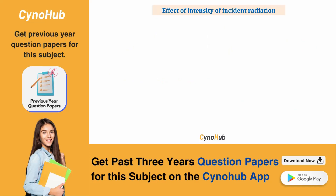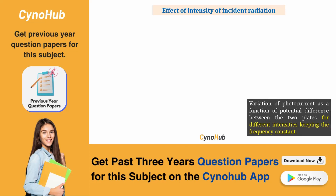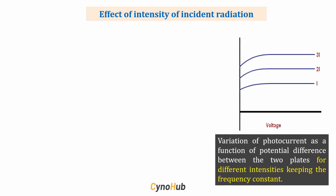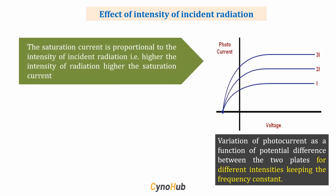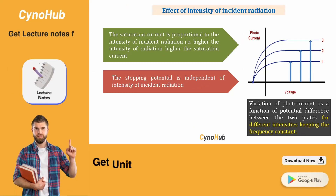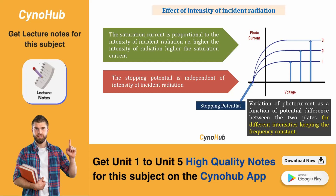The second factor is the effect of intensity of incident radiation. The variation of photocurrent as a function of potential difference for different intensities, keeping frequency constant, shows that as intensity increases, the saturation current also increases in proportion — higher intensity means higher saturation current. However, irrespective of the value of intensity, the stopping potential remains the same. This means the stopping potential is independent of the intensity of incident radiation.